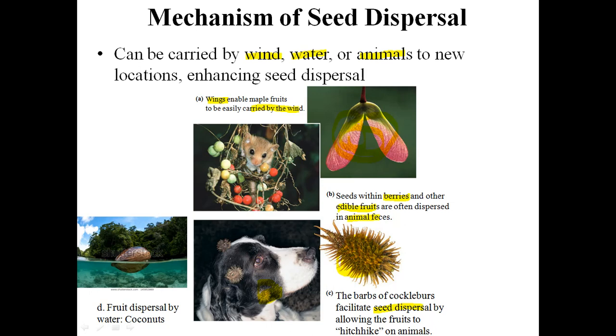The fourth type of fruit dispersal is by water. An example is coconut. This is the end of my lecture. Thank you very much.